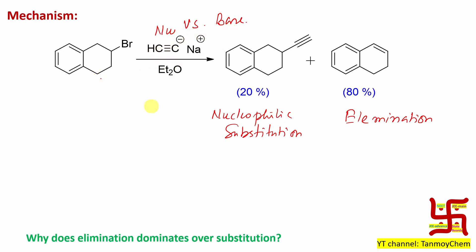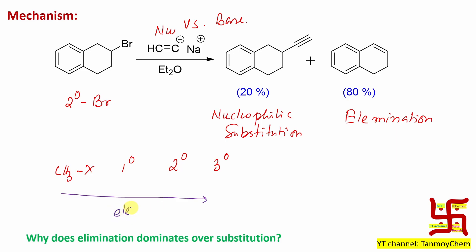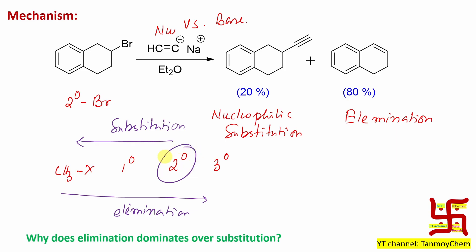The question is: which contributes more — the acetylide's nucleophilicity or its basicity? If you look at this substrate, it's a very interesting one. First of all, it is a secondary bromide. As you may have studied, going from methyl halides to primary to secondary to tertiary, elimination increases. So a secondary substrate is a borderline substrate, and that's why both processes take place simultaneously — mixed kinetics, meaning elimination and substitution both occur.